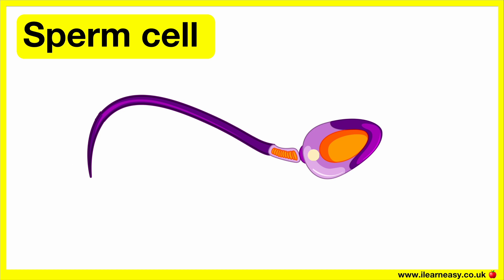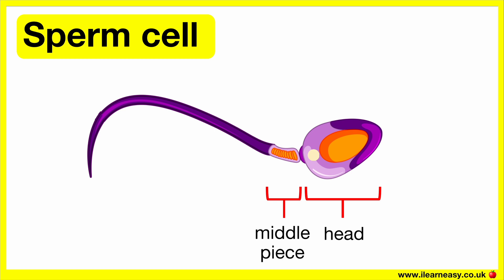The sperm cell can be split into three parts: the head, the middle piece, and the tail or flagellum. The sperm cell also has other parts which aid its function.